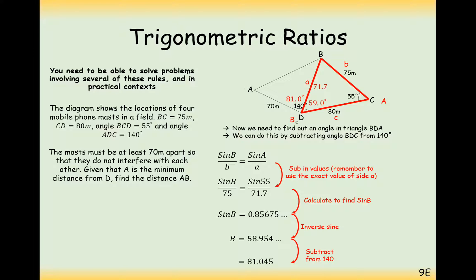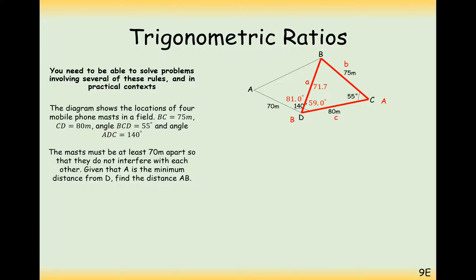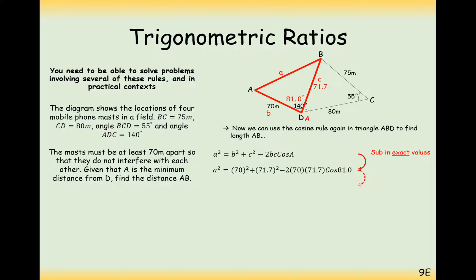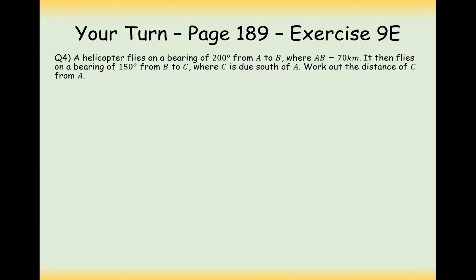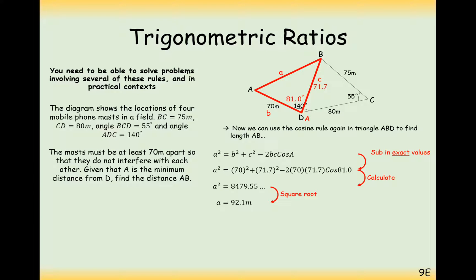Great, so we're basically there. We've got two sides and the angle between those two sides, so we can get the length from A to B. So now let's look at this triangle here and it's going to be a cosine rule formula. Substitute the values into the cosine rule and we get 92.1 meters.